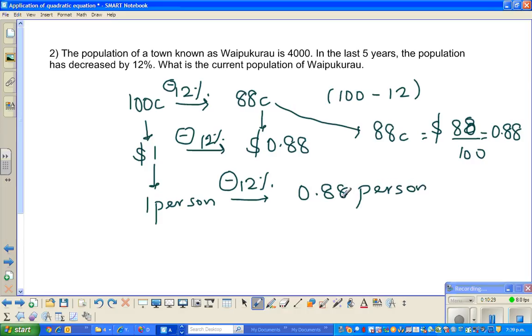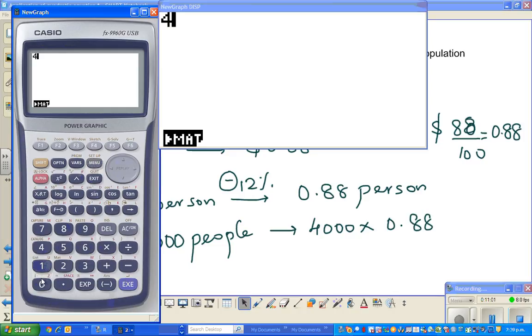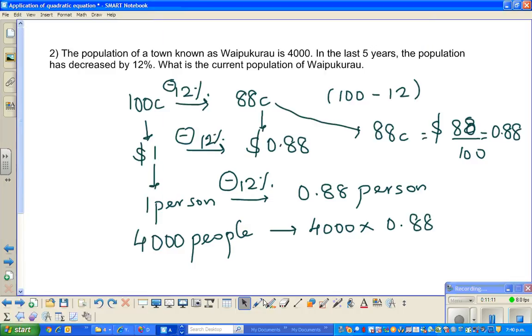It doesn't make sense in people, but mathematically it does make sense. If for one person it became 0.88 persons, if you had 4000 people, you have to multiply by this factor, which is 0.88. This is 4000 times 0.88. I'll show you the long method after the shortcut method. This equals 3520 people are there now. Let us write the answer: 3520.